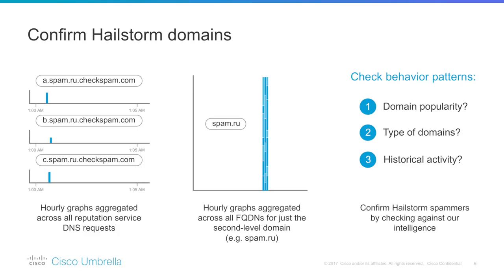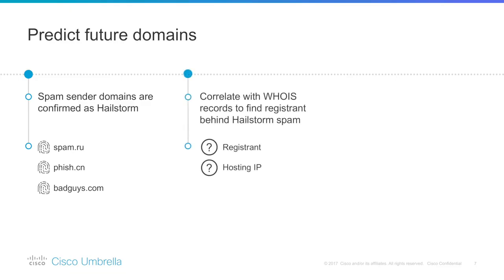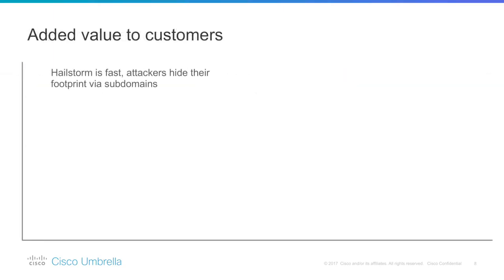Over a period of about a month, this model has flagged over twenty-two and a half thousand hailstorm domains. Once it has been established that a domain was responsible for a hailstorm attack, we then use WHOIS intelligence that Umbrella has to query details of the registrant and hosting IPs for that domain. The registrant found will be placed on a watch list in case they register any other domains in the future.